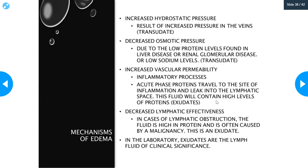The fourth mechanism is decreased lymphatic effectiveness, in cases of lymphatic obstructions. The fluid is usually high in protein and is often caused by malignancy — it's an exudate. Things that can obstruct lymphatic flow include large amounts of bacteria or cancer cells and tumors. It's essentially a mechanical blockage of fluid flow from the presence of bacteria or malignant cells or tumors in the lymphatic system. So the first two mechanisms produce transudates and the last two produce exudates, but all four are mechanisms of edema.